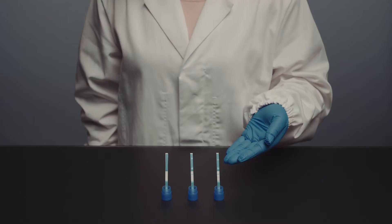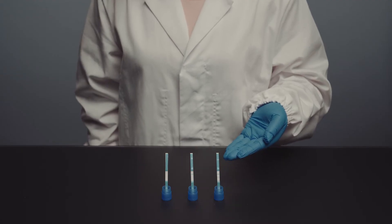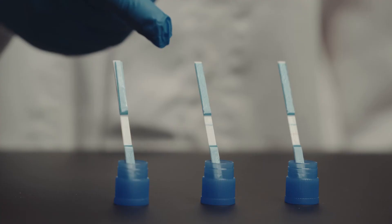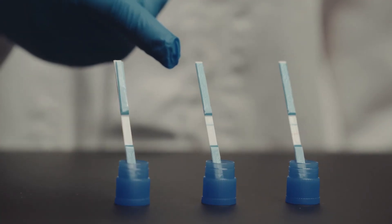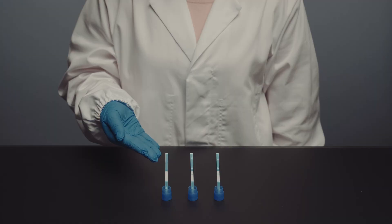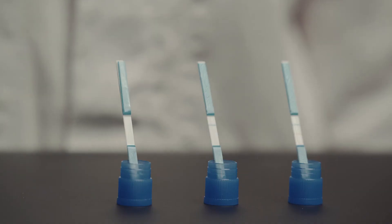If a red and blue line appears, it means that Gluten was detected. If only a blue line appears, it means that no Gluten was detected. And if only a red line or no line appears, it means that the test is invalid.